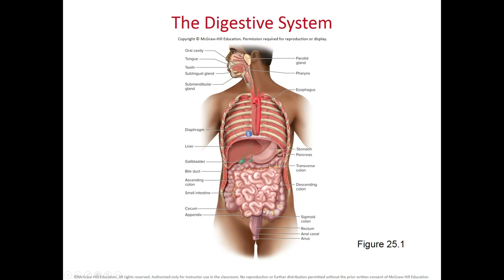There is a valve between the small intestine and the large intestine called the ileocecal valve, which prevents feces from going back into the small intestine. In the small intestine, we generally should not have bacteria or microorganisms, because if we do, we will have inflammation called enteritis, leading to diarrhea. The ileocecal valve prevents feces from backing up from the large intestine into the small intestine.